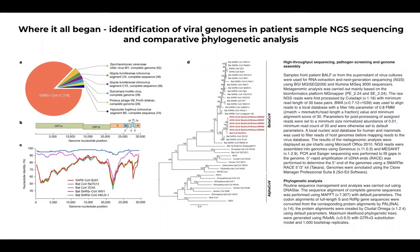These sequences do not come to us in an assembled format. We do not have a full sequence just coming out of a sample we collect. Therefore, we have to first assemble these genomes together. The way this would typically be done — here we have a project example not from COVID-19 but from a different virus — is you can think of a human sample, for example RNA-seq, which shows expression of different sequences in human tissue.